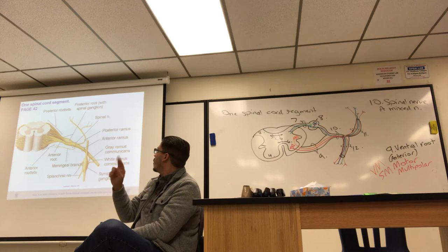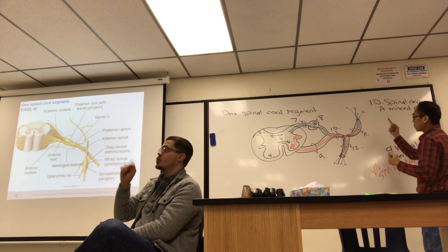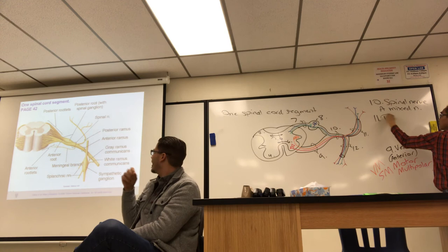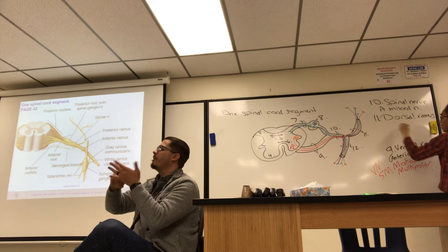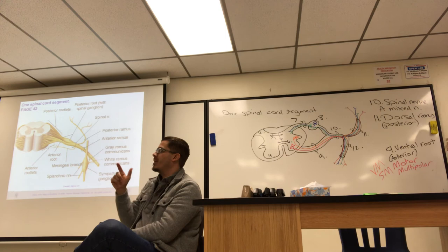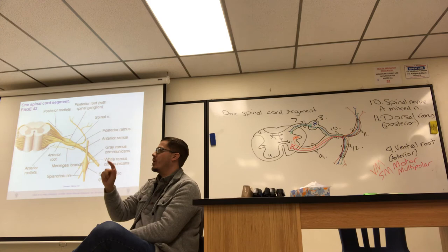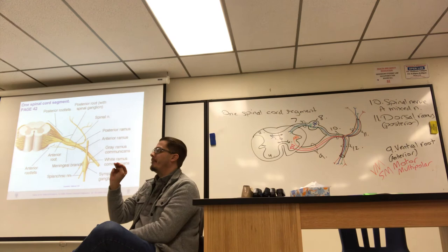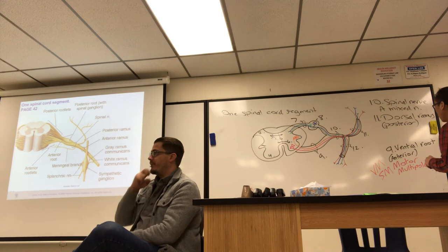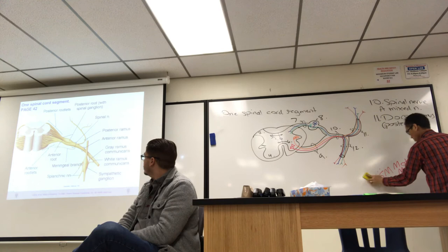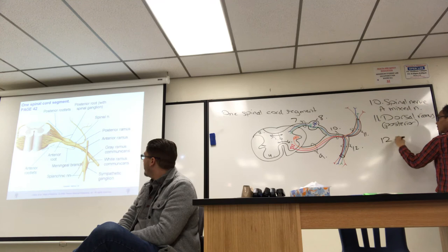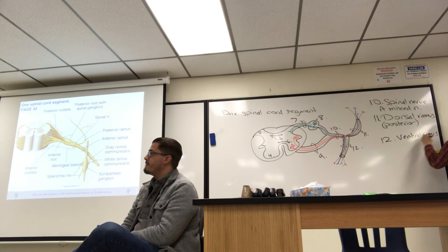The spinal nerve is very short and immediately splits into two rami. A ramus means branch. The two branches are the dorsal ramus — also called posterior ramus — which is the smaller of the two, and the ventral ramus — also called anterior ramus — which is larger and innervates body parts like the upper and lower limbs.